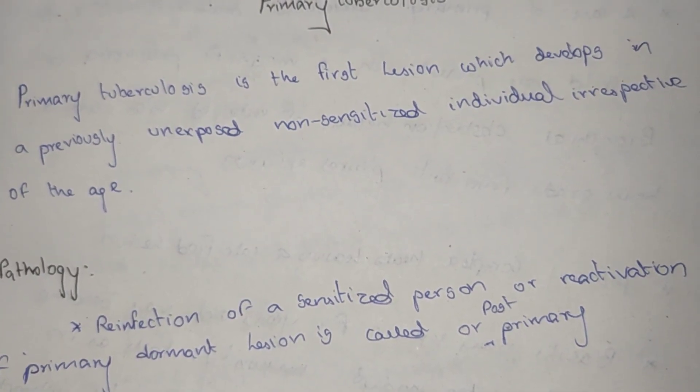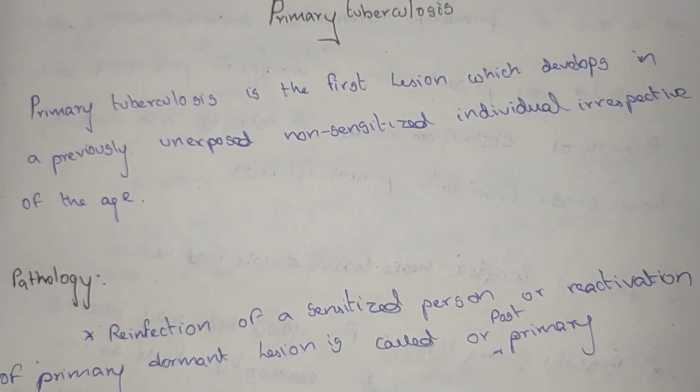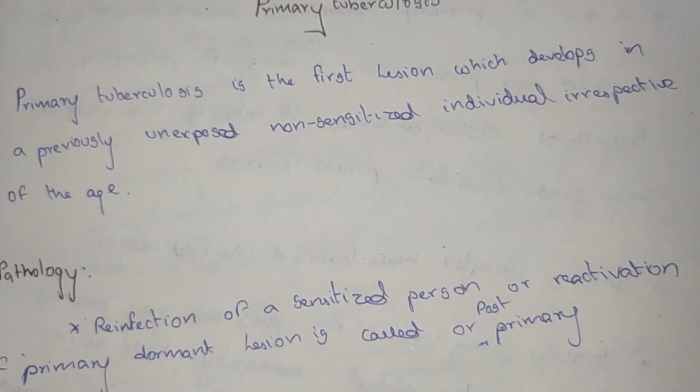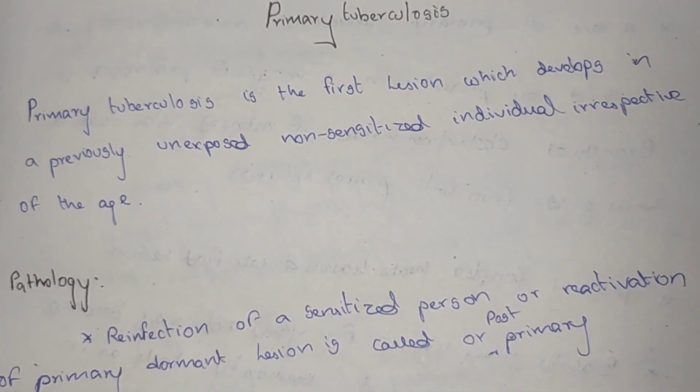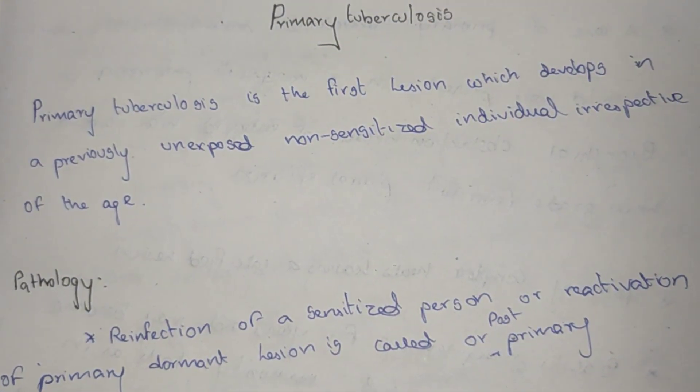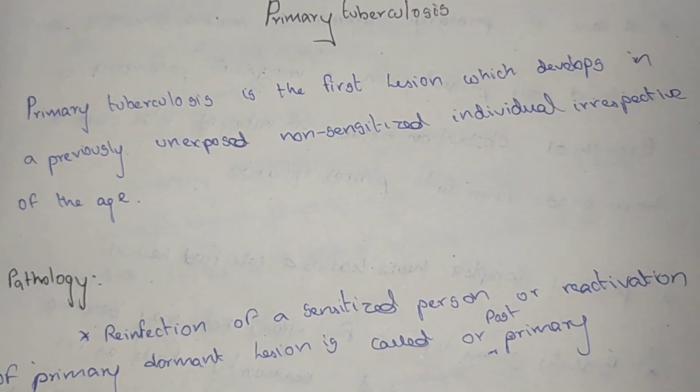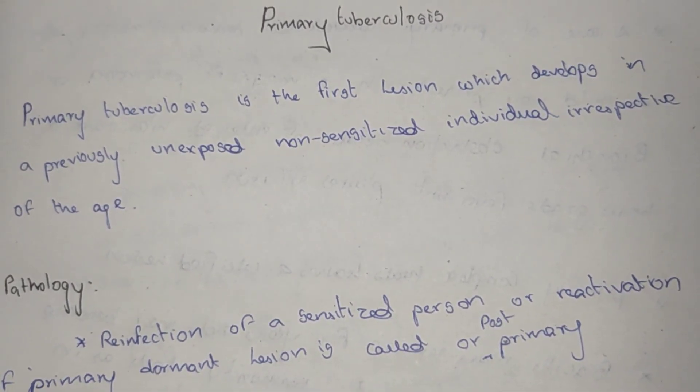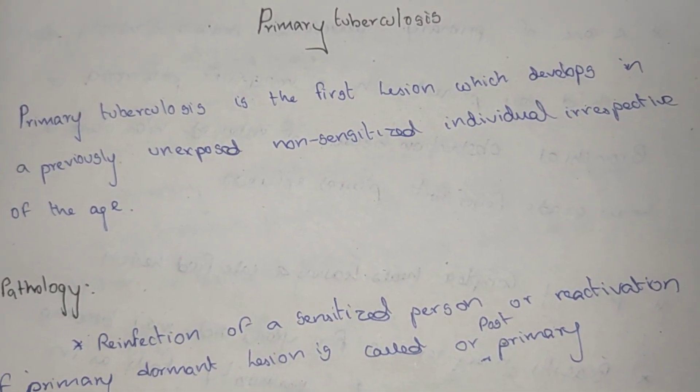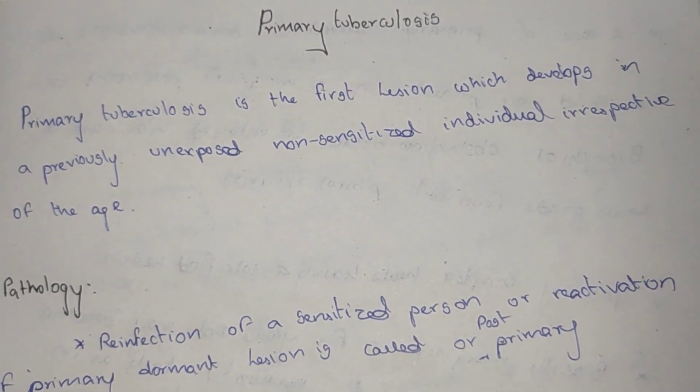Primary tuberculosis is the first lesion which develops in a previously unexposed, non-sensitized individual irrespective of the age.